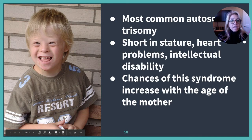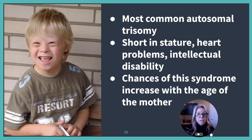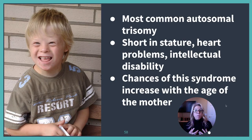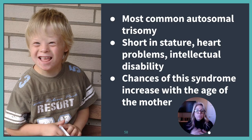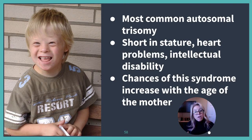On your notes: aneuploidy is the incorrect number of chromosomes; trisomy is 2N plus one; monosomy is 2N minus one. Down syndrome is the most common autosomal trisomy. Characteristics include shortened stature, usually heart problems, and intellectual disabilities. The chances of this syndrome increase with the age of the mother.